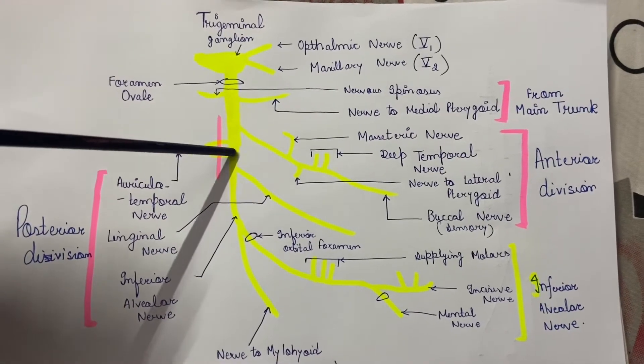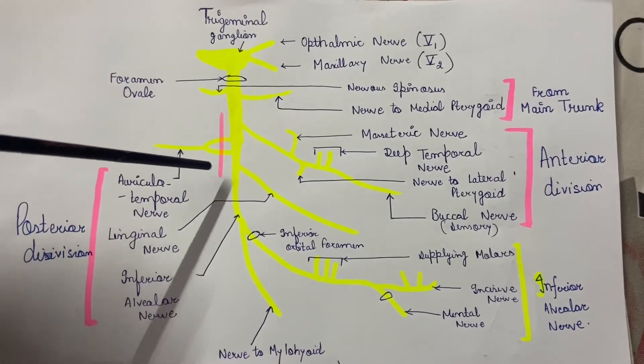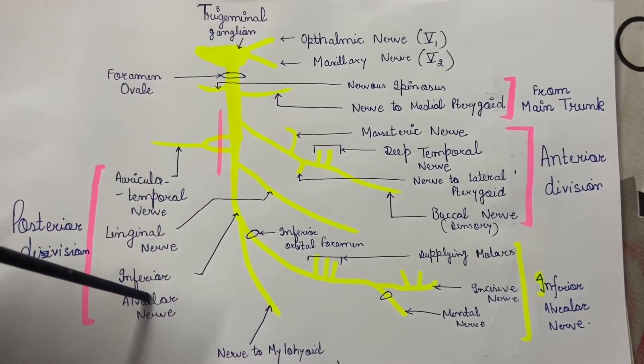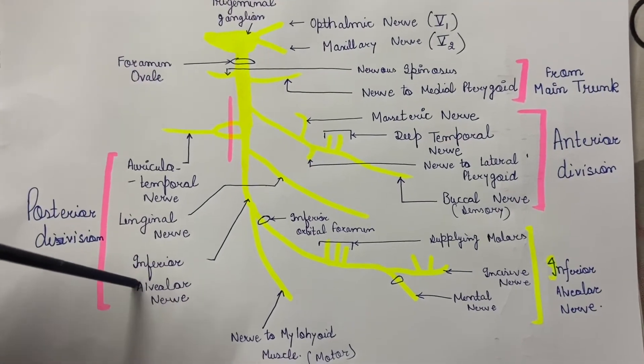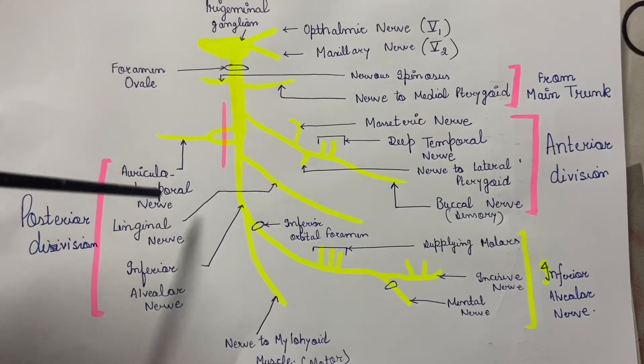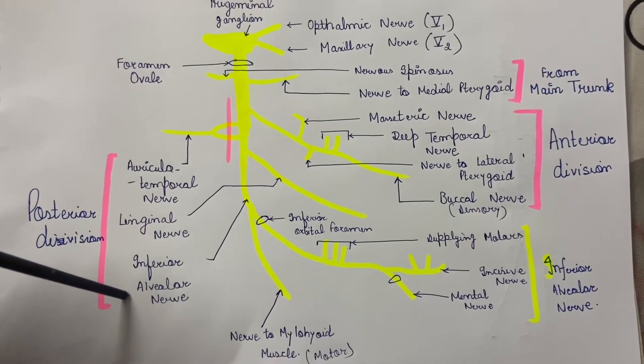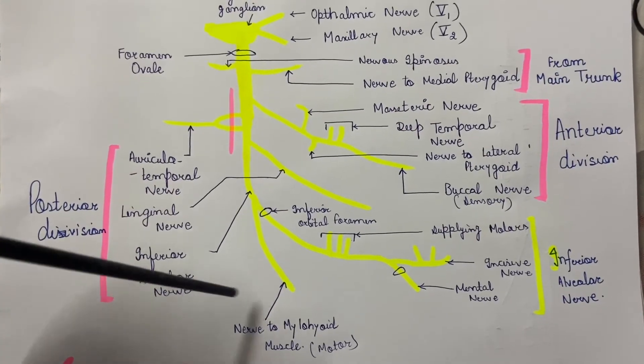Coming to the posterior division, it mainly gives three branches: auriculotemporal nerve, lingual nerve, and the inferior alveolar nerve. In this group, all the branches are sensory in nature except one.